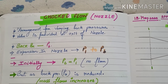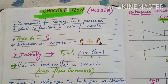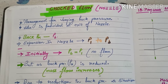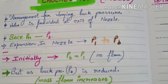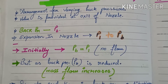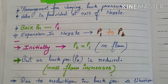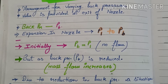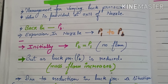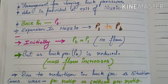The valve is provided at the exit of the nozzle. The back pressure acting on the flow is taken as pb. The expansion in the nozzle is taken as p1 to pb, where p1 is the original pressure at the entry point of the nozzle and pb is the back pressure acting on the flow in the backward direction.